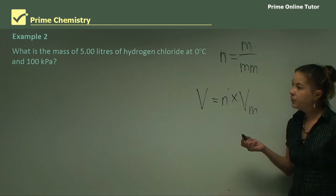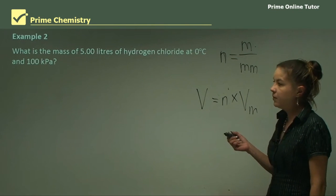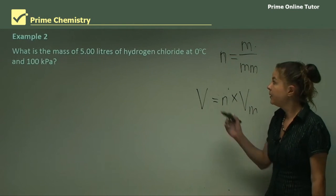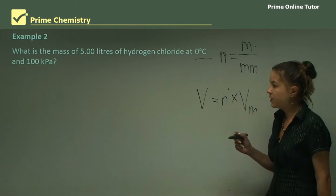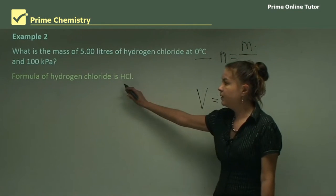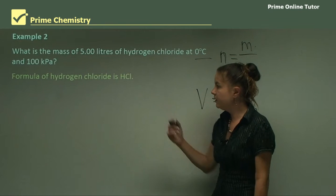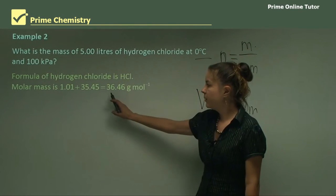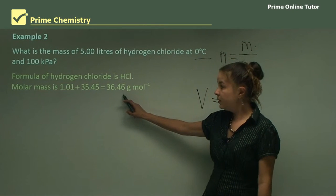So example two, what is the mass of five liters of hydrogen chloride at zero degrees and 100 kPa? So we've changed our temperature now, so we'll have a different molar volume. So start with the formula. It's HCl or hydrochloric acid. The molar mass, if we add these two up, will be 36.46 grams per mole.